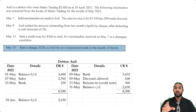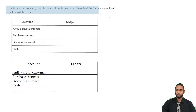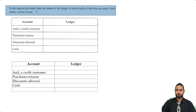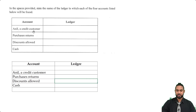If you have any questions on this part of the question, feel free to leave them in the comment section below. Now let's take a look at part B. It says: in the spaces provided, state the name of the ledger in which each of the four accounts listed will be found.